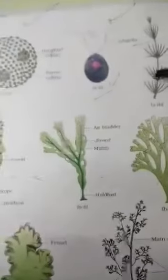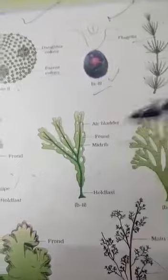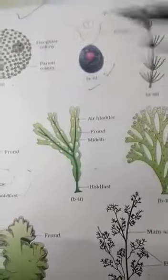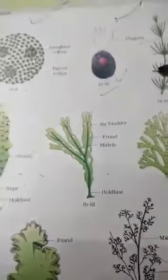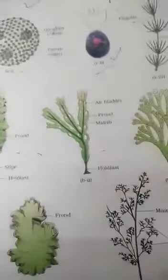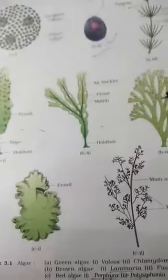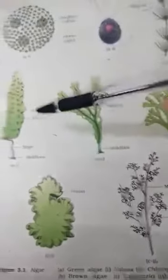All those in the top line are green algae. Algae can be divided into green, brown, and red algae. Including Spirogyra, four of the examples shown are green algae. Then come the brown algae.